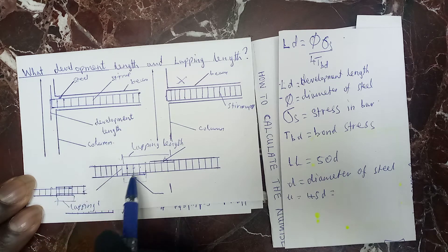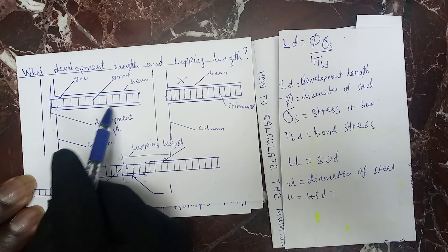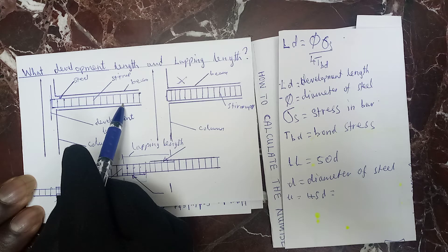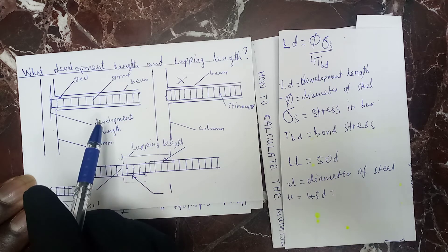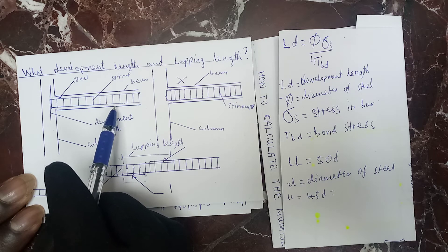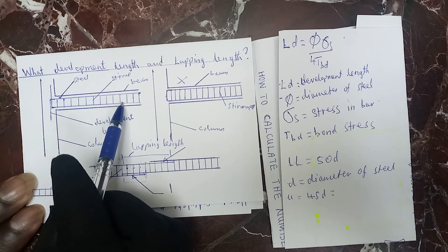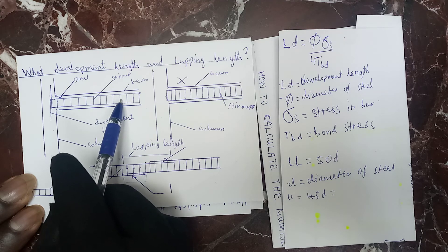This lapping zone — it is not always good to provide it in the middle of the beam, because at the middle of the beam a bending moment can easily occur at the center of your beam. So it is not always good to provide this lapping length at the center of your beam.